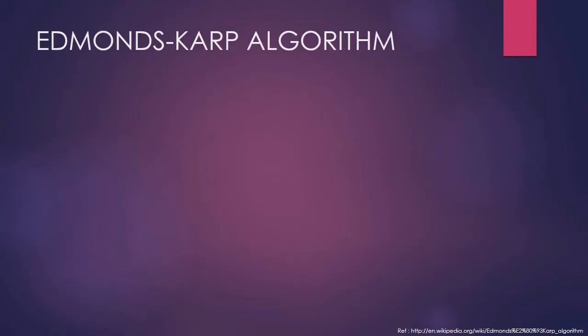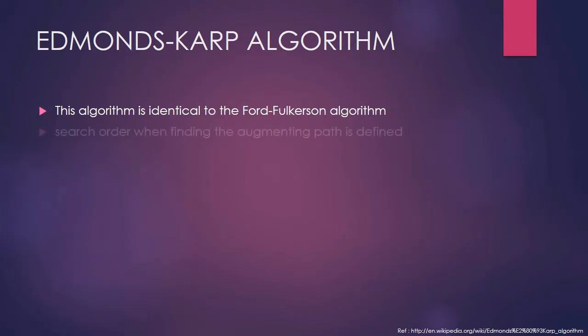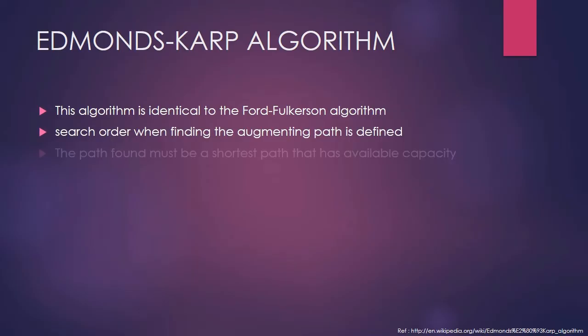Edmonds-Karp algorithm is used to find the maximum flow in a flow network and is an implementation of the Ford-Fulkerson algorithm. The difference between Edmonds-Karp and Ford-Fulkerson is that the augmenting path is defined in Edmonds-Karp — the paths found must be a shortest path from source to sink with available capacity.